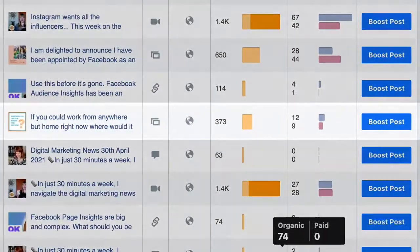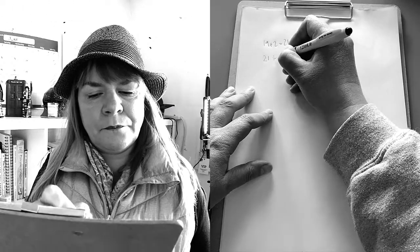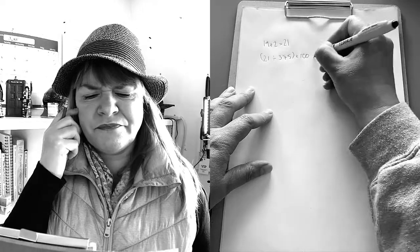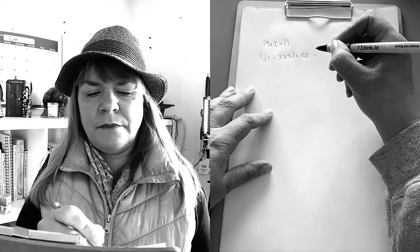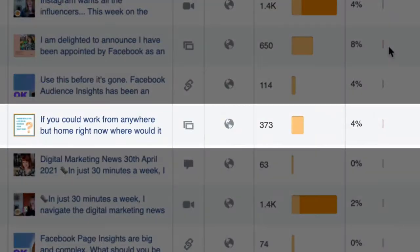So I went and had a look at this post. Facebook tells us the engagements are 19 plus 2, which equals 21. I divided that by the reach, which was 375, and multiplied it by a hundred, which comes out at 5.6% — which I rounded up to 6%. What does Facebook say? 4%.